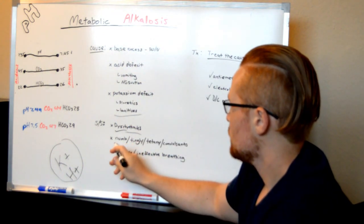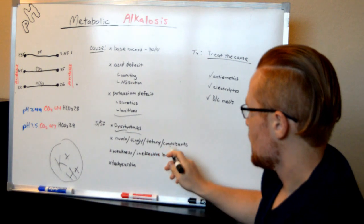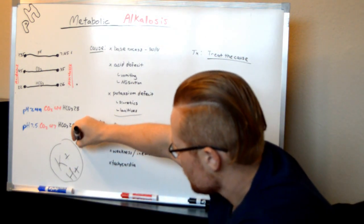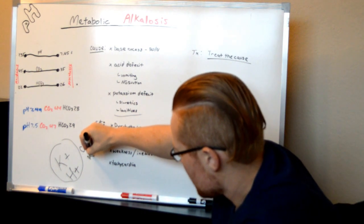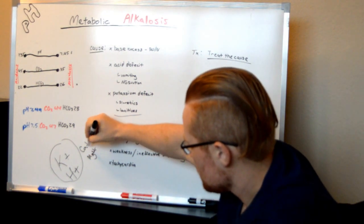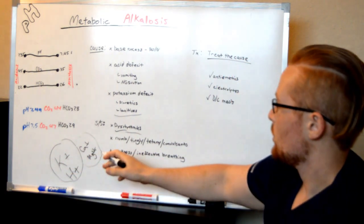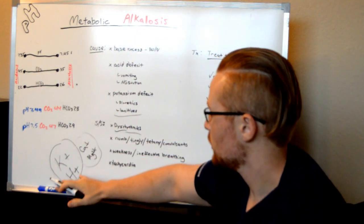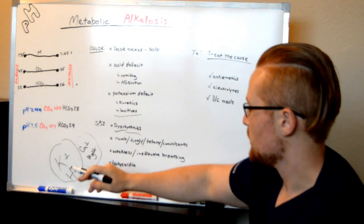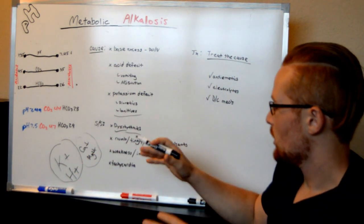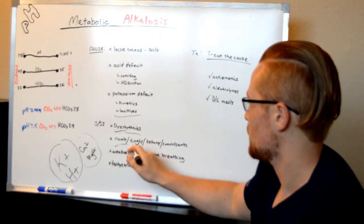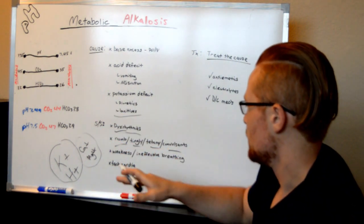The numbness, tingling, and tetany - I told you H plus and K plus are similar. You also have calcium and magnesium, which are also pluses, and both are depressants. If these are not enough because you have low H, K, calcium, and magnesium, instead of muscles being weakened, they can be hyper-excited. You'll feel numbness, tingling, leading to tetany and convulsions.